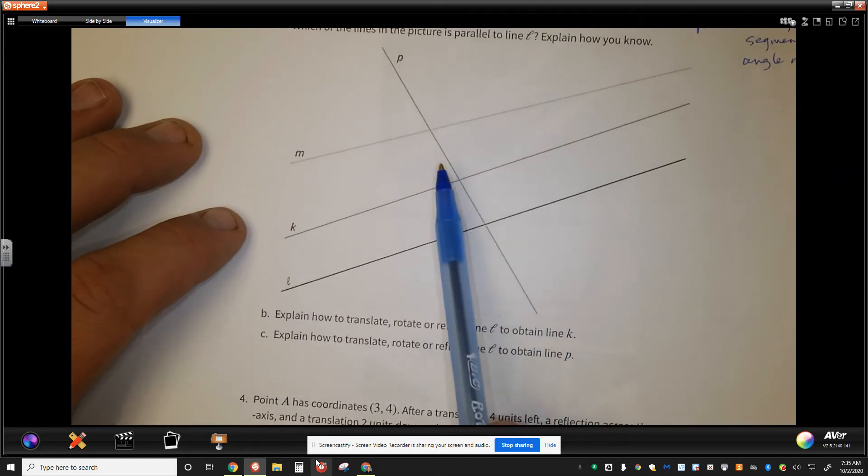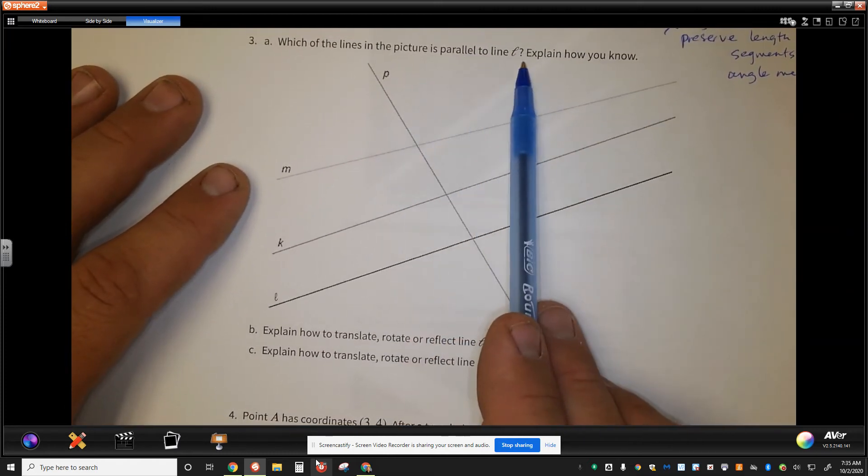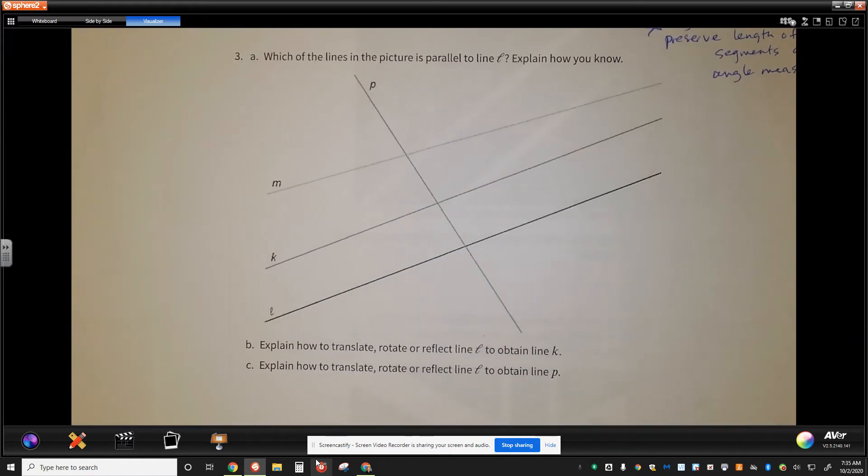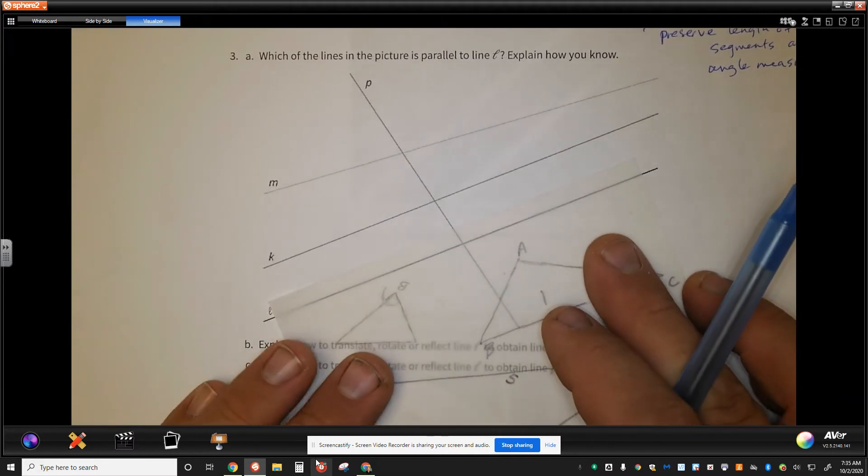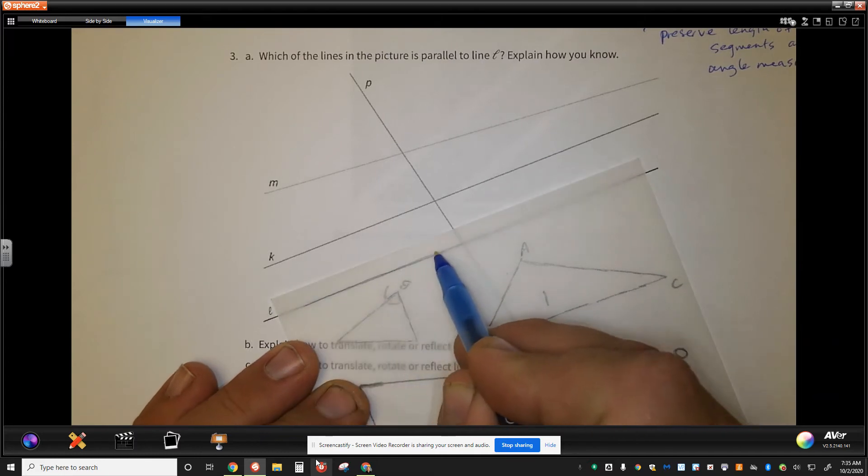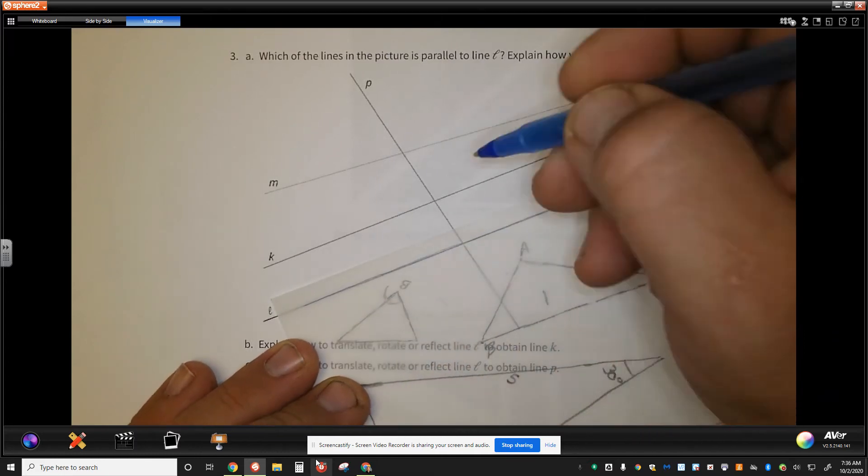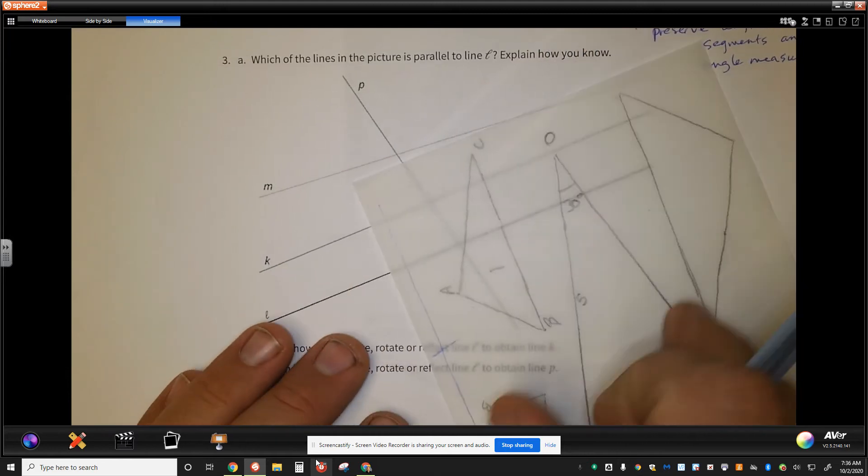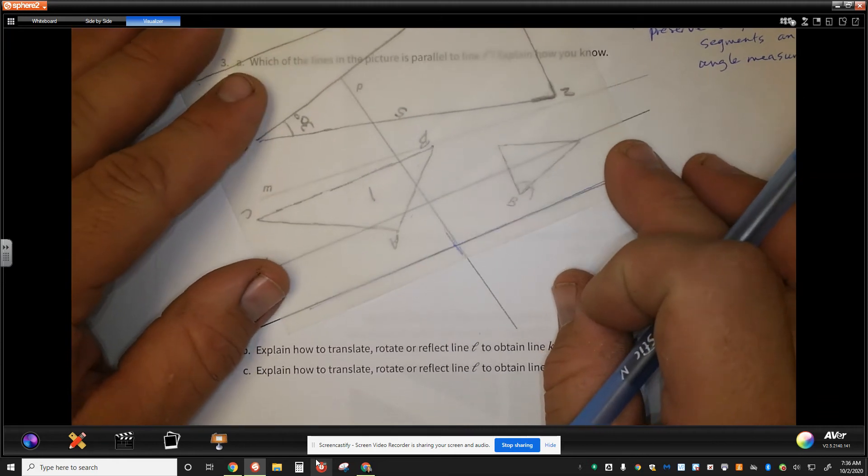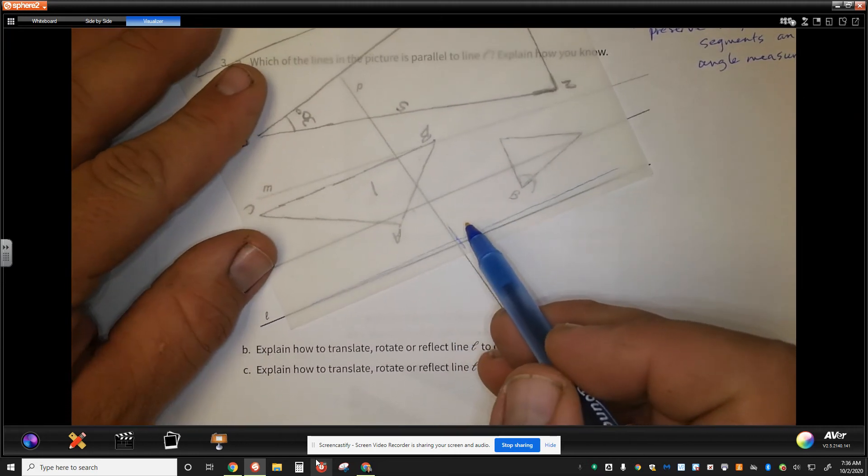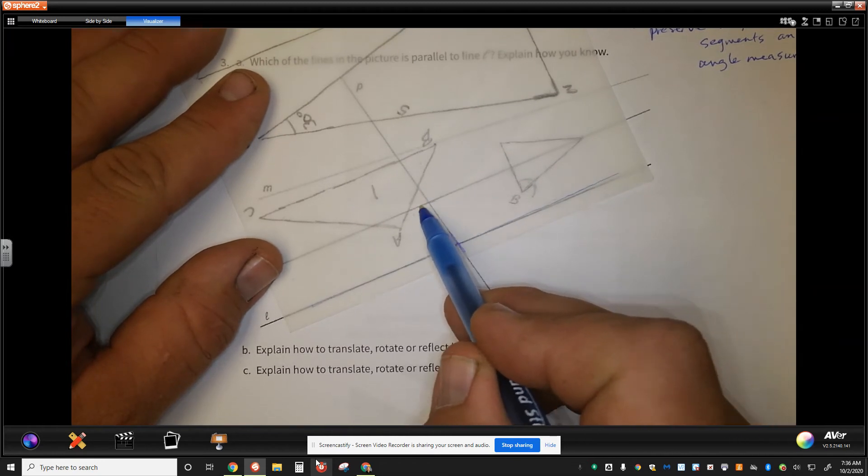Moving on, which of the lines in the picture is parallel to line L? Explain how you know. So, line L, how could we know? Well, my first thought is that I'm going to take this line right here, and I'm going to draw line L. And then I'm going to take just a little tiny piece of line P, and I'm going to rotate this line. And actually, I'm going to flip it around, rotate it 180 degrees, and you see the same line. I'm going to rotate this so that it comes to this line.